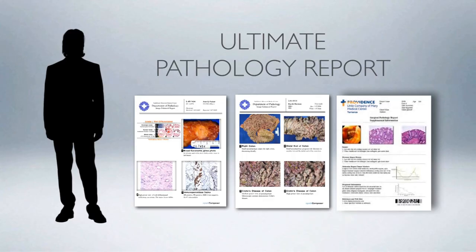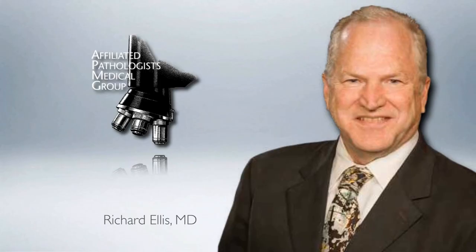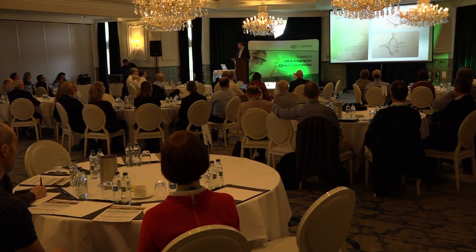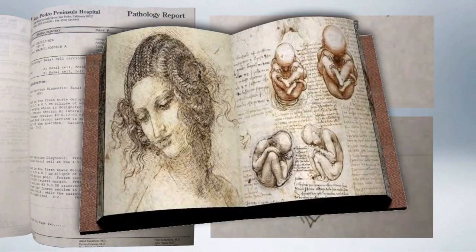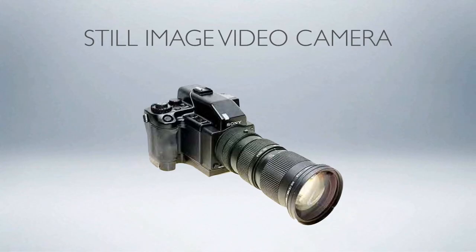My pathology group has always been in search of what we call the ultimate pathology report — one that is as compelling as we possibly can make it. The head of our group, Dick Ellis, who retired recently, has been at the forefront of putting content into reports, starting off with simple drawings and then moving into Polaroid images scotch-taped onto reports. That's how those reports went up on the chart.